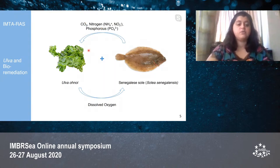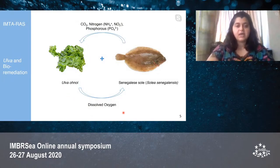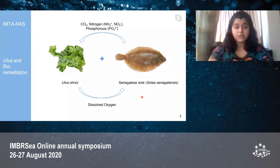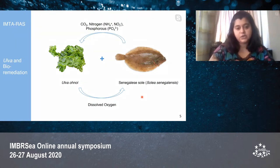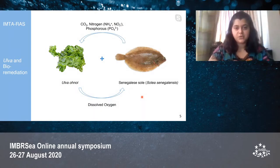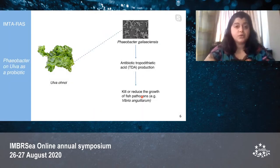At the same time, Ulva is able to release dissolved oxygen back to the fish tanks. So the co-culture of these two species together would lead to a more balanced IMTA-RAS system. It's important to note that Ulva, as a biofilter, doesn't only have a role in bioremediation of fish wastewater — it can also have a role in bacterial control strategies in IMTA-RAS.